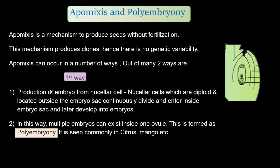Welcome back, this is Falgun. We are here to discuss the last topic of this chapter — apomixis and polyembryony. Apomixis is the mechanism to produce seeds, but in this case seeds are produced without fertilization. That is the main point to be noted.